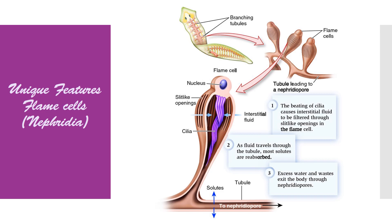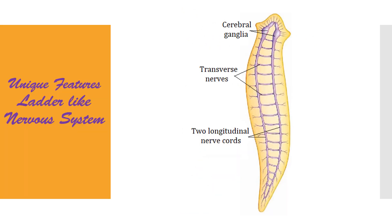The next unique feature of these organisms is a ladder-like nervous system. These organisms have two longitudinal nerve cords which are connected to each other with the help of transverse nerves. This kind of arrangement gives a ladder-like appearance, which is very clearly shown in the diagram. So these organisms have a ladder-like nervous system.